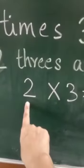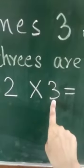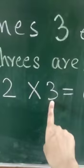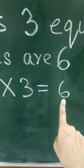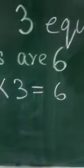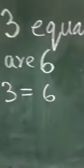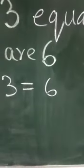First number denotes the number of groups. Second number denotes the items in each group. And when we multiply these two numbers, we get the product. That is the answer. So the answer that we get in multiplication is known as product.